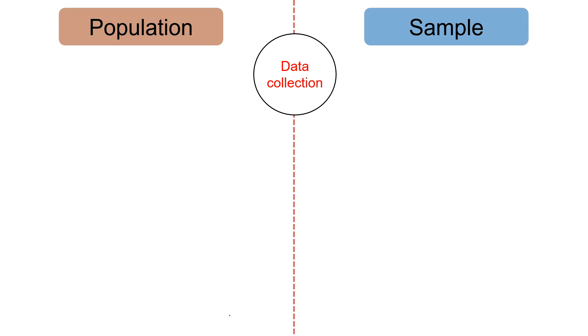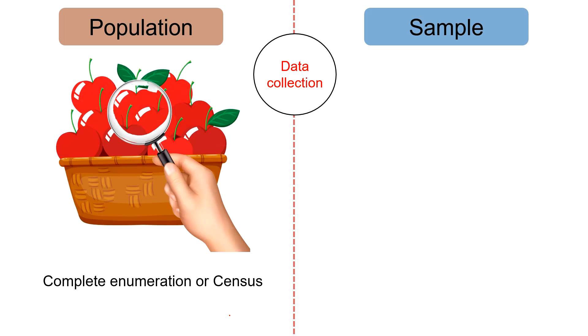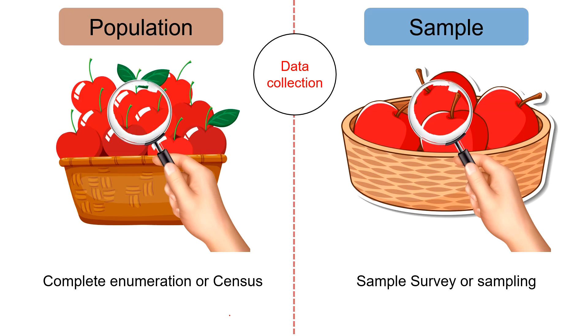Next, data collection. When information is collected from all units of population, the process is known as census or complete enumeration. Conversely, the sample survey is conducted to gather information from the sample using the sampling method.